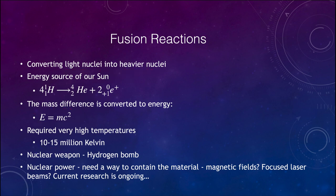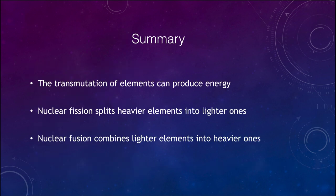So let's go ahead and finish up here as we do with our summary. We talked about the transmutation of elements and how that can produce energy. And we can do that through either nuclear fission, which splits heavier elements into lighter ones, or nuclear fusion, which combines the lighter elements into heavier elements. Both of these are able to produce energy. So that concludes this lecture on nuclear energy. We'll be back again next time for another topic in physical science. So until then, have a great day, everyone. And I will see you in class.